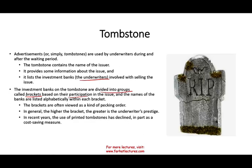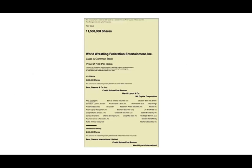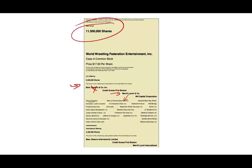In recent years, tombstones are less common since you don't need to advertise in newspapers anymore. As a sample tombstone, we have World Wrestling Federation Entertainment — an interesting example because two prestigious investment firms listed are Bear Stearns and Merrill Lynch. Bear Stearns was wiped out entirely, and Merrill Lynch was bought by Bank of America — both of which were part of this offering for the World Wrestling Federation, which was trying to sell 11.5 million shares to the public. The point is: times do change, and they change very fast.